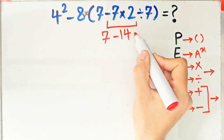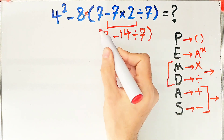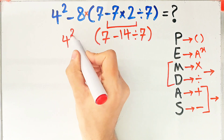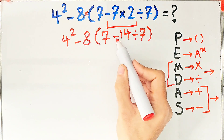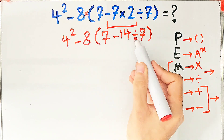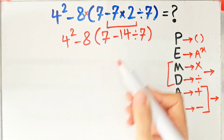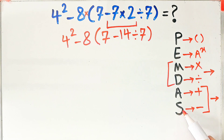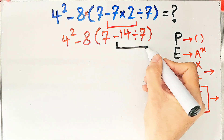Now we have seven minus 14 divided by seven inside the parenthesis. Inside the parenthesis we have subtraction and division. First we simplify the division because division has higher priority than subtraction: negative 14 divided by seven equals negative two.